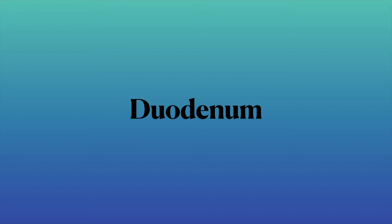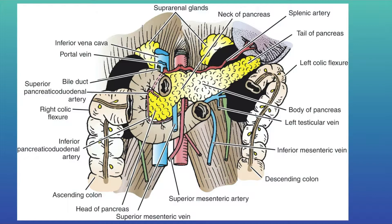The anatomy of the duodenum. The duodenum is a C-shaped tube about 25 centimeters long that connects the stomach with the jejunum. It is the first part of the small intestine.